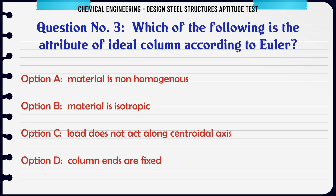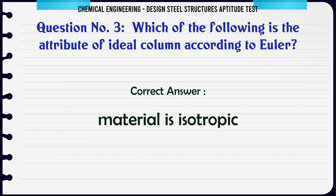Which of the following is the attribute of ideal column according to Euler? A. Material is non-homogeneous. B. Material is isotropic. C. Load does not act along centroidal axis. D. Column ends are fixed. The correct answer is: Material is isotropic.